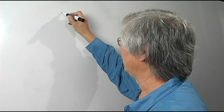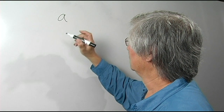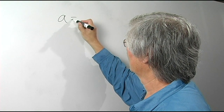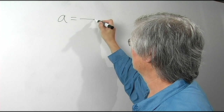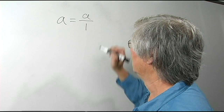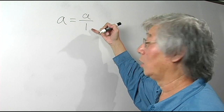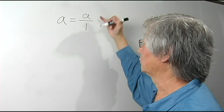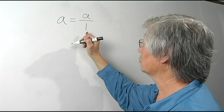Another way to think about reciprocal is this. Let's take the number A. Any number is equal to the number divided by one. Dividing by one doesn't change the value, so this is a true statement.